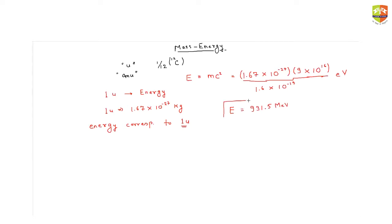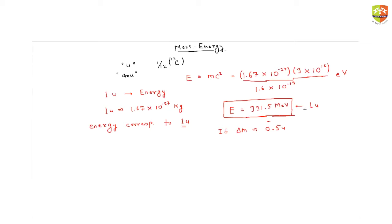So 931.5 MeV is the energy corresponding to 1 unit. If the mass defect is 0.5 units, the energy would be half of that. So for whatever the mass defect is in units, you just multiply that number by 931.5 MeV and you get the answer.